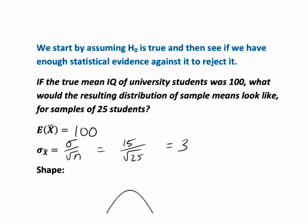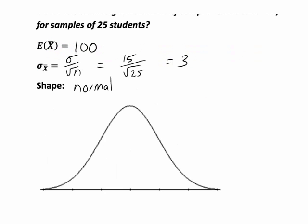That gives a standard error of 3. Because we were told that IQ is normally distributed, the distribution of sample means will also be a normal distribution. So if H0 was true, our distribution of sample means would be centered at 100 and would go up in steps of 3 for the standard error, so it would look like this.